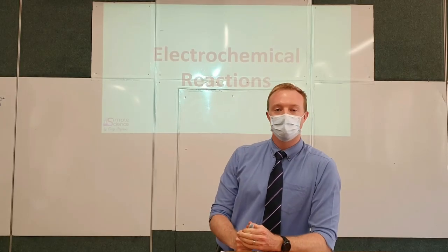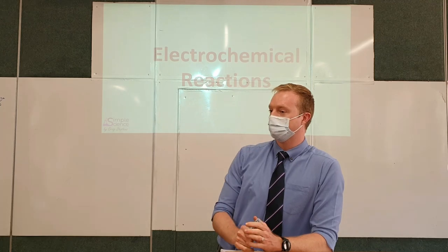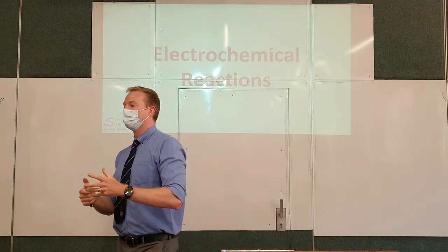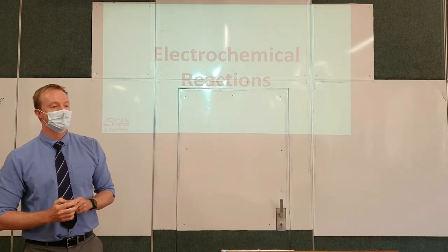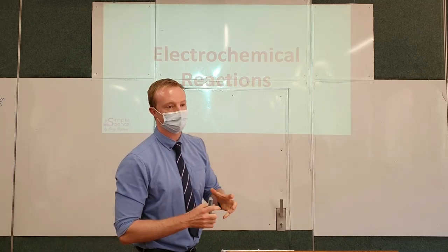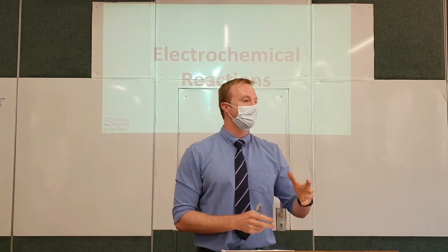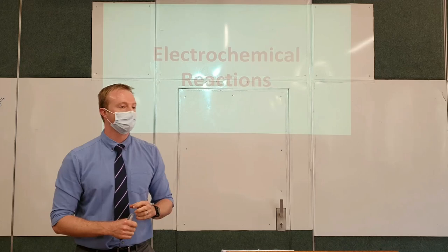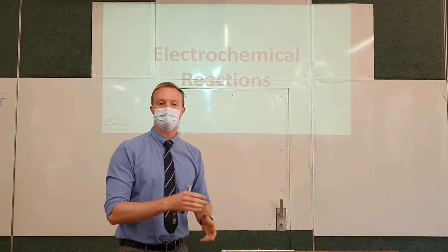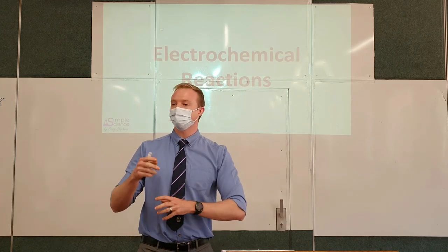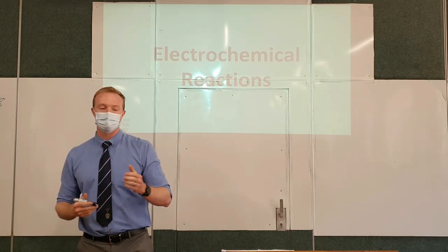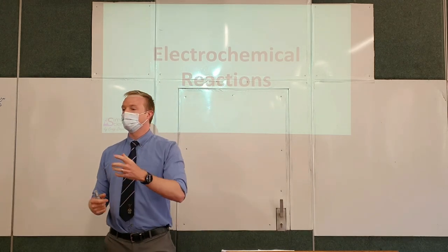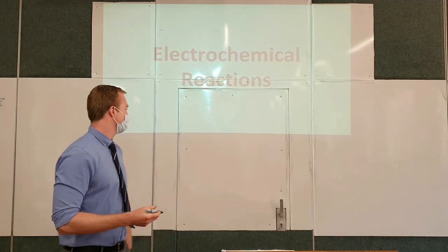Today's extra lesson is on electrochemical reactions. This is the first of two lessons on this section, focusing on spontaneous reactions which form part of what we call galvanic cells. The simple idea here is that we look at chemical reactions as an exchange of electrons, and later on we try to harness that movement of electrons as electrical energy.